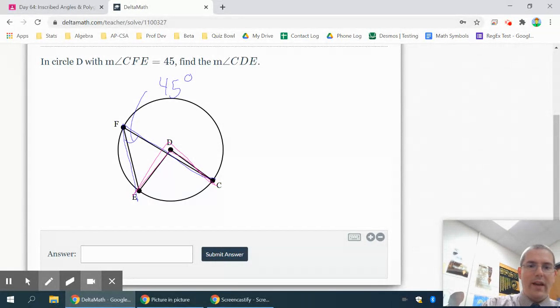So remember 45 is the inscribed angle. The inscribed angle should be half of this arc. So if that's 45, this has to be twice that, which is 90. And then this arc matches the central angle. So 90 will match 90, and it's a 90 degree angle.